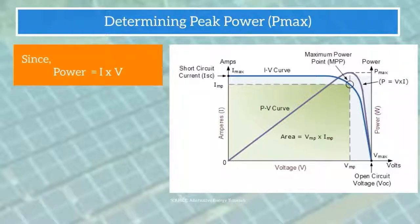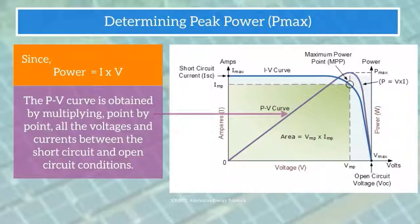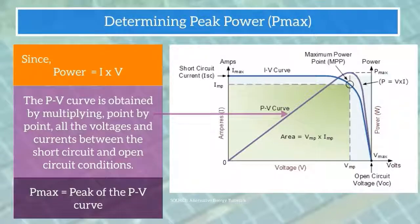Since power equals current times voltage, the PV curve is obtained by multiplying point by point all the voltages and currents between the short circuit and open circuit conditions. Then, we can simply read Pmax since it is the peak of the PV curve.